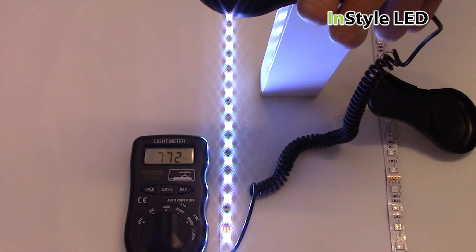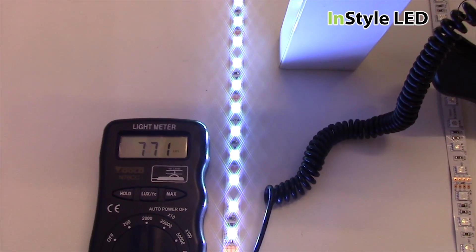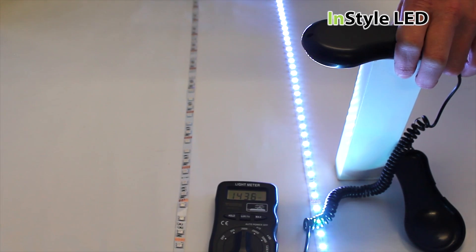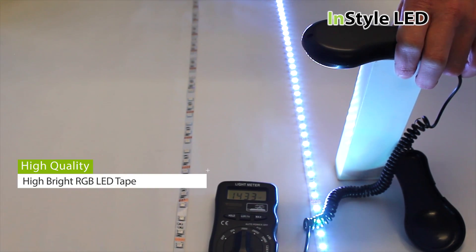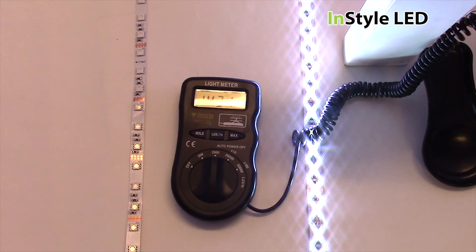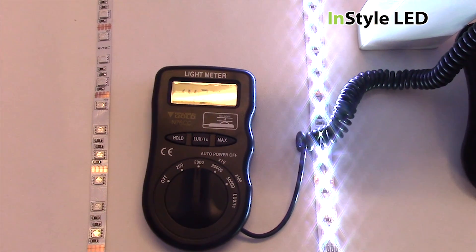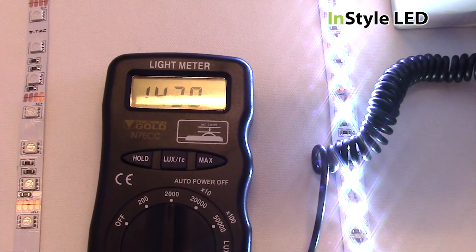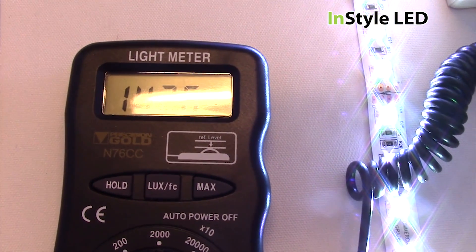The low quality LED strip shows a maximum of 775 lumens and the high quality LED strip has a maximum of 1425 lumens. The high quality LED strip is nearly double compared to the low quality LED strip.